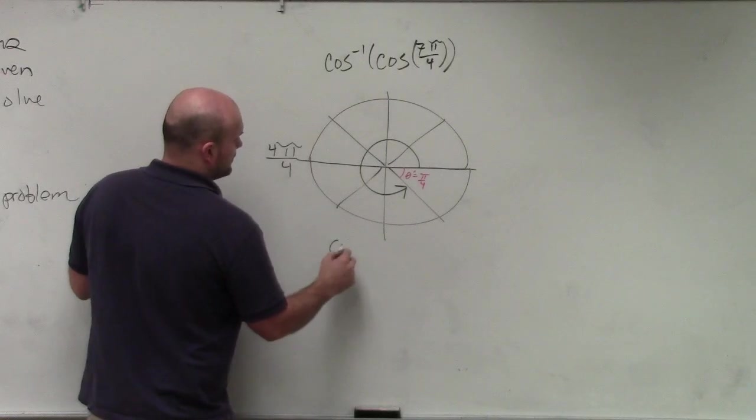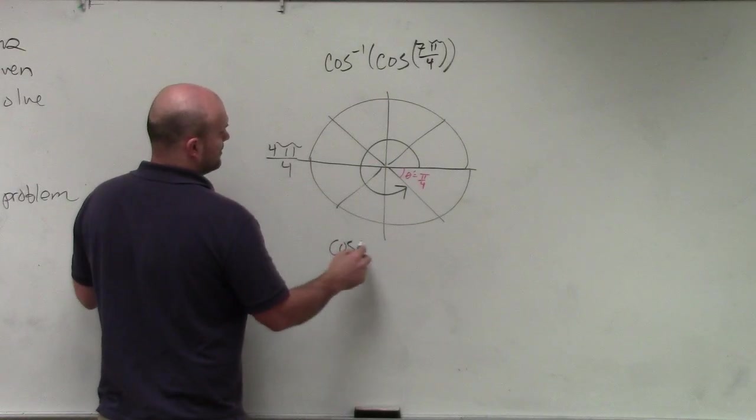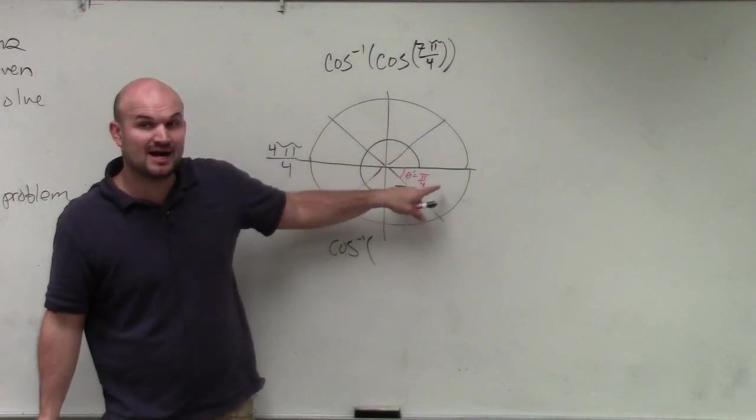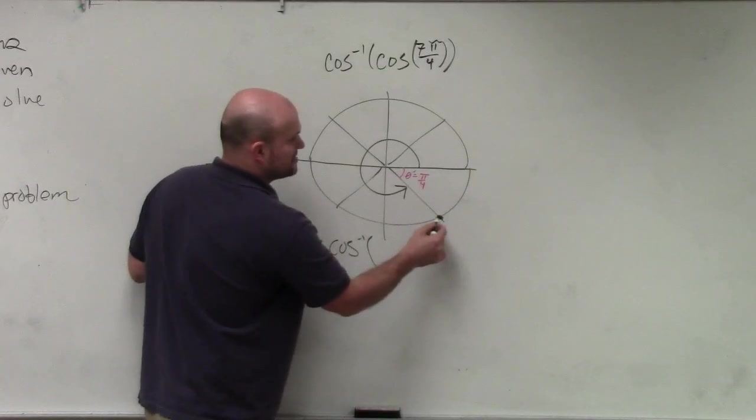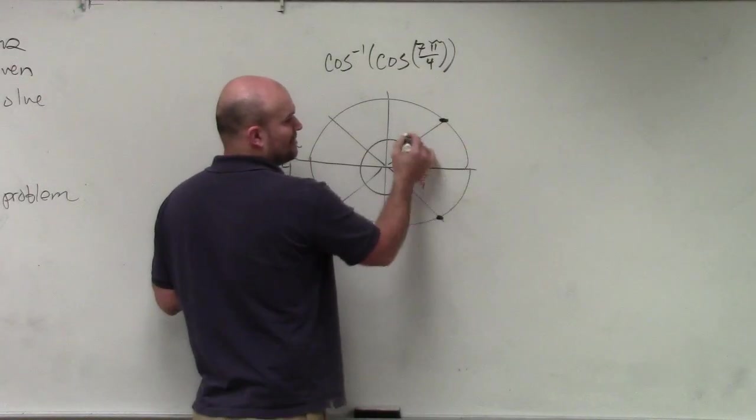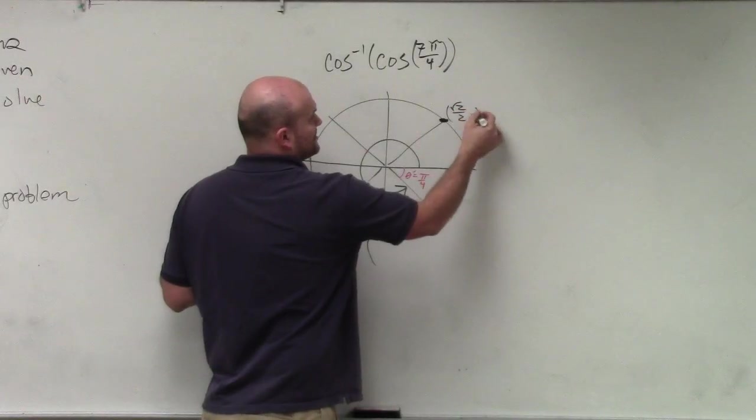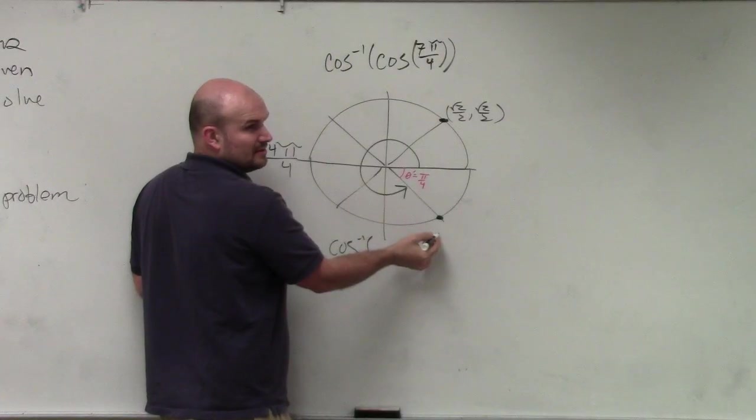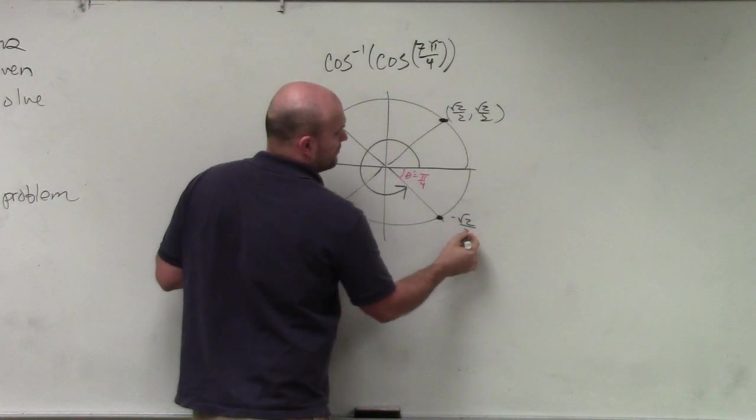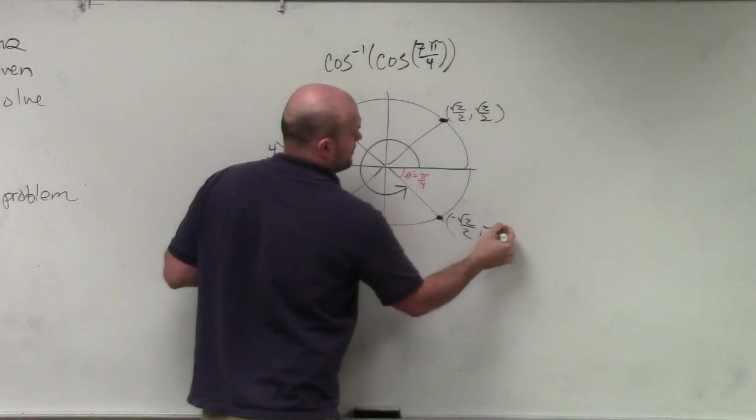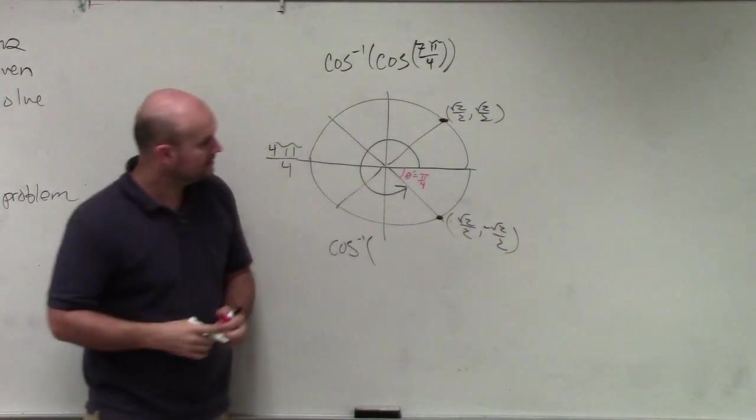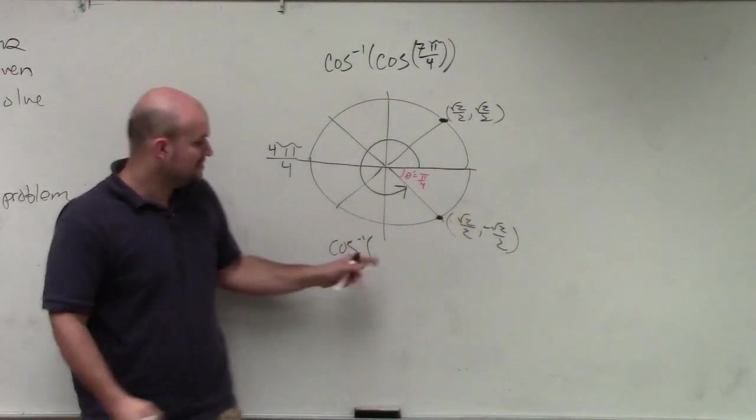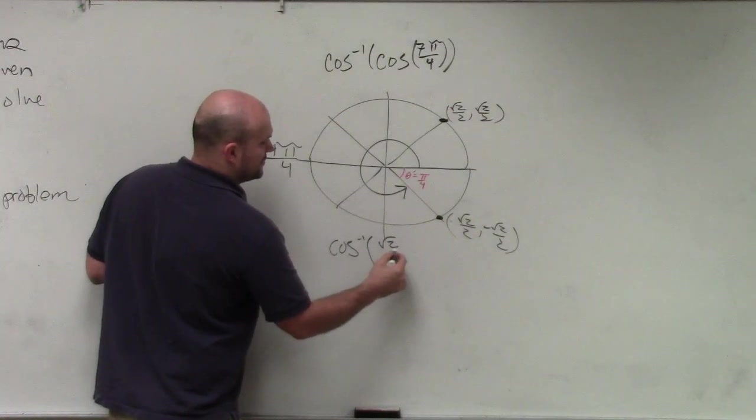So therefore, I now have the cosine inverse of square root of 2 over 2. However, in this quadrant though, is cosine positive or negative? So here's this point down here. So here's the reference angle, right? Square root of 2 over 2, comma square root of 2 over 2. Well, this point is going to be, what's going to be negative? The sine, right? I'm sorry, the y-coordinate. But does everybody see how that one's negative? Right? Only the y is negative. So cosine is still positive. So my angle now is cosine of square root of 2 over 2.